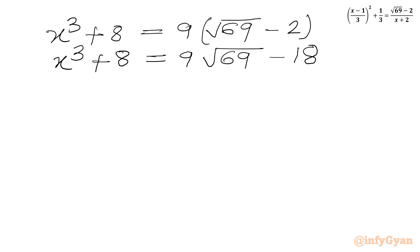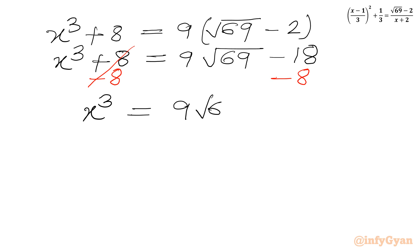So we have x³ plus 8 equal to 9 times the square root of (69 minus 2). Subtracting 8 from both sides, we get x³ equal to 9 times the square root of 69 minus 26.